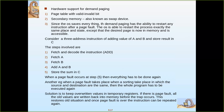The solution is to keep overwritten values in a temporary register. If there is a page fault during sorting, all the old (original) values are written back from the temporary register. When sorting takes place and overwriting occurs and a page fault interrupts, the original array values are restored from the temporary register instead of losing all progress. All the old values are written back into memory before the trap, which restores the old state, and once the page fault is over, the instruction can be repeated again.